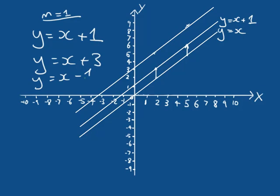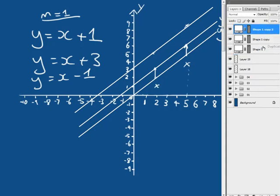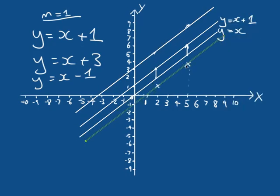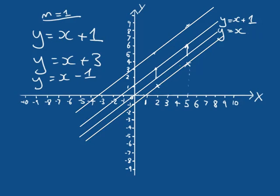Taking our points two and five: if I put 2 into Y equals X minus 1, Y equals 2 minus 1 equals 1; five minus one is four. We've translated down by a unit. The more generic form would be Y equals MX plus TY, where TY represents the translation in Y. So we take Y equals MX and add a translation in Y to it.